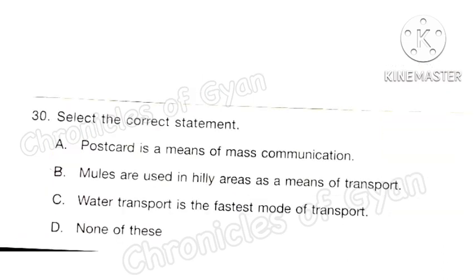Question 30: Select the correct statement. Statement A — a postcard is a means of mass communication — is incorrect, as it is a means of personal communication. Statement B — mules are used in hilly areas as a means of transport — is correct; a mule is a domestic hybrid between a donkey and a horse, the offspring of a male donkey and a female horse. Statement C — water transport is the fastest mode of transport — is incorrect, as air transport is the fastest. So the answer is option B.